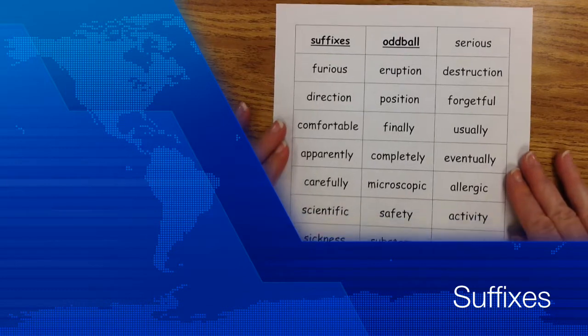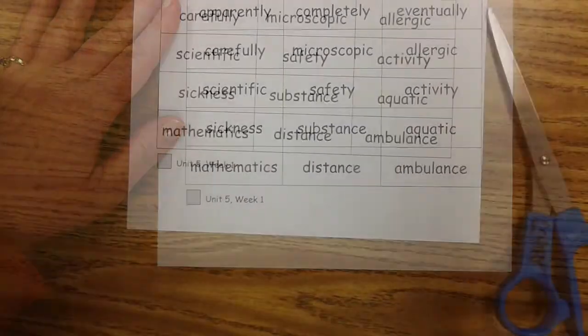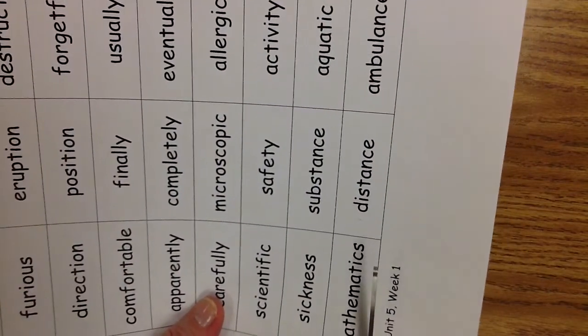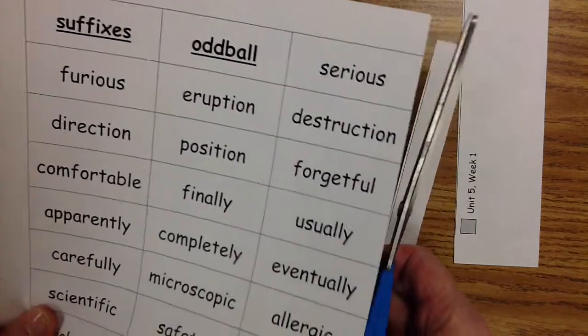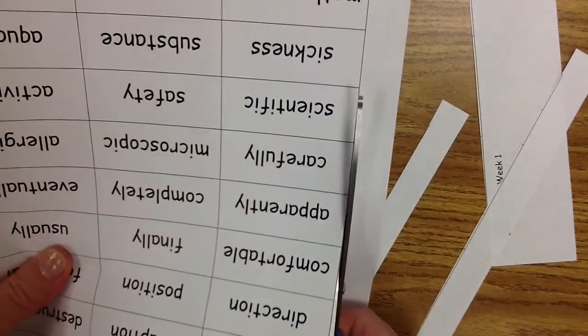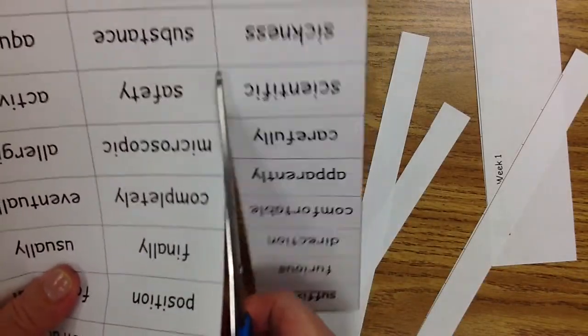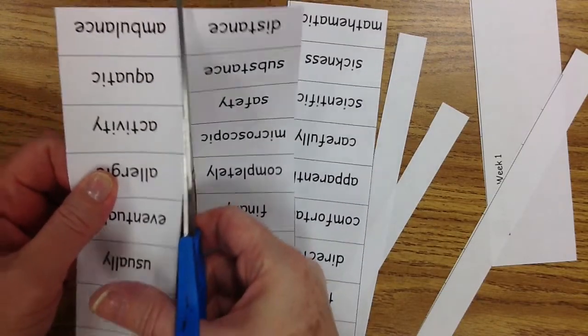This week we are going to be working on suffixes. A suffix is a letter or group of letters added to a base word or root. We need to go over different suffixes that we have not gone over yet. Go ahead and cut out your spelling words, and pause the video so I can finish cutting them out.